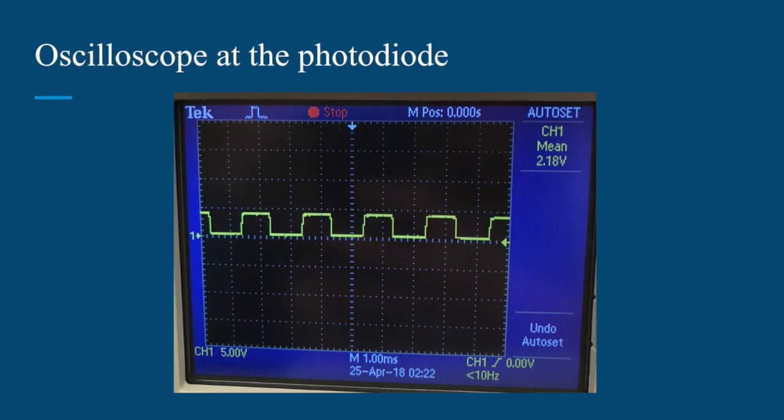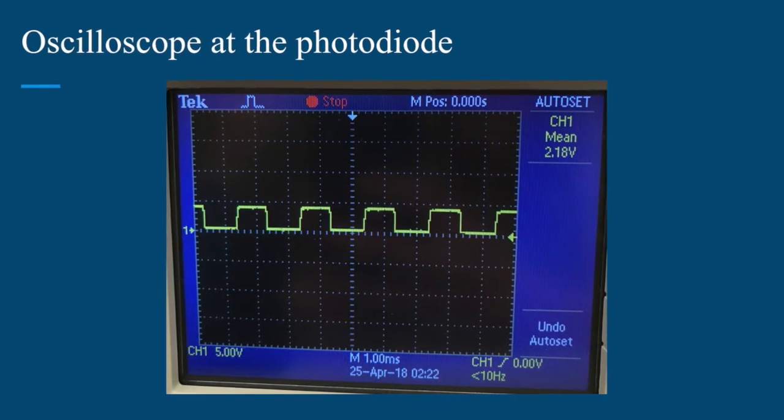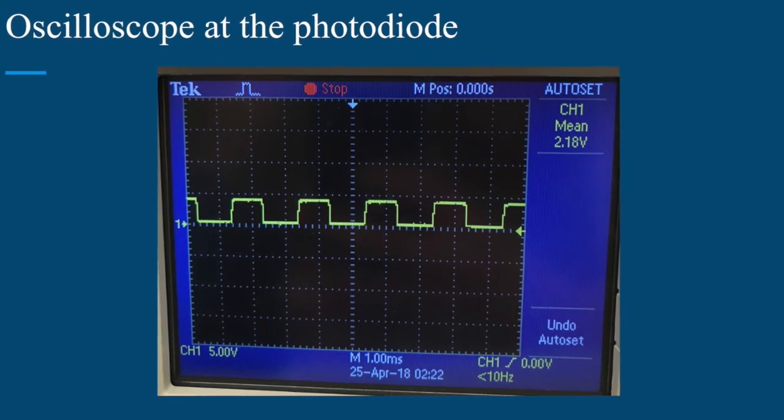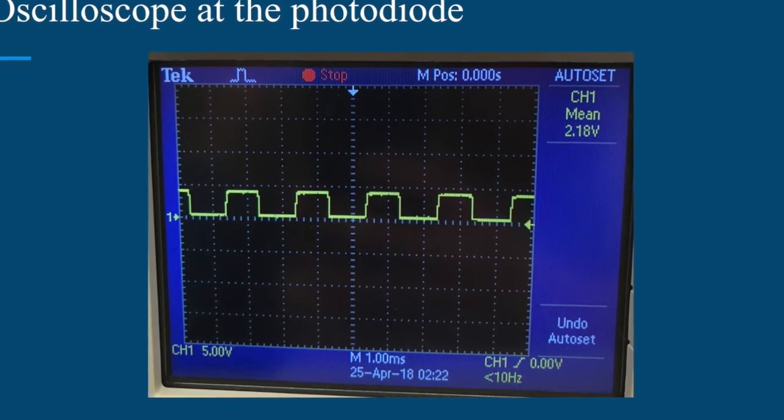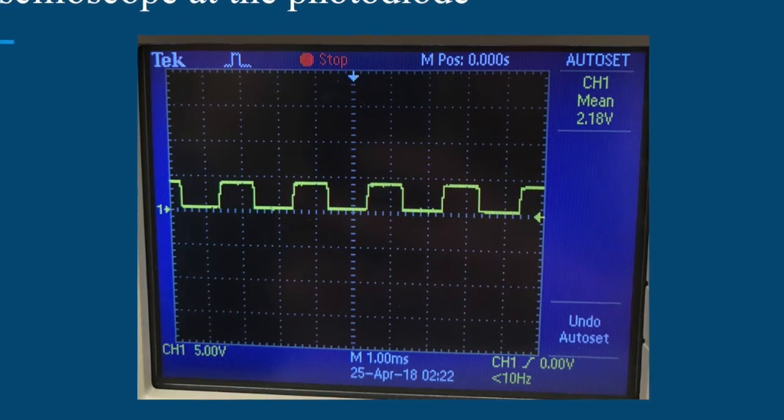This is our oscilloscope reading at the point of the photodiode. As you can see the signal is slightly smaller than it was at the transmitting point of the laser which is why the signal will need to be amplified.